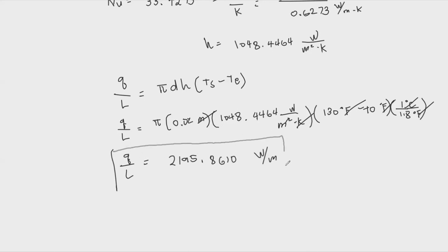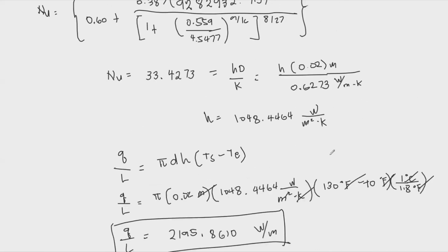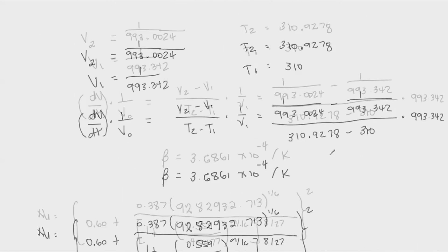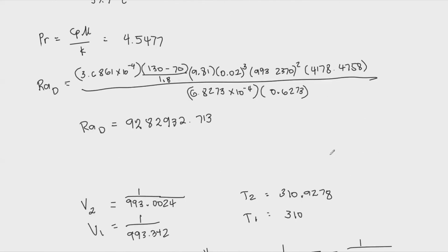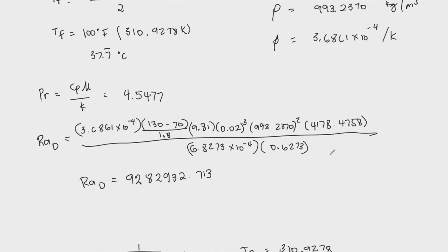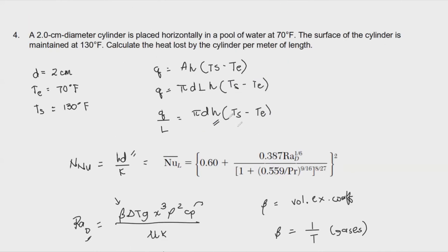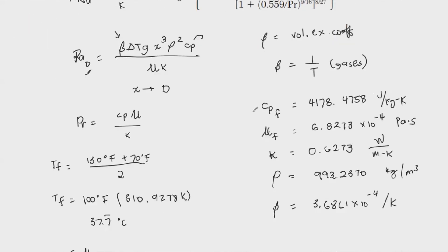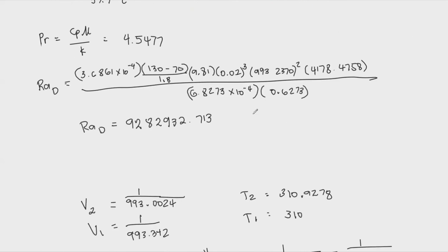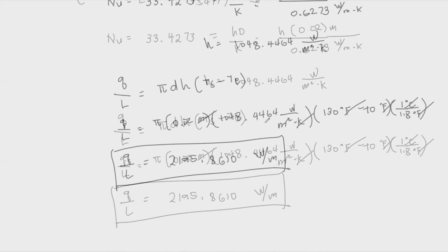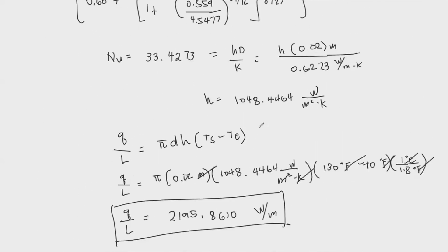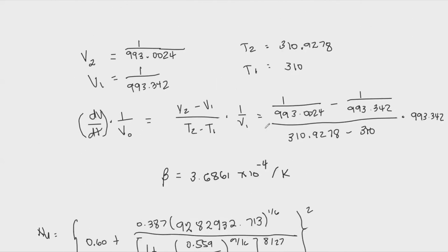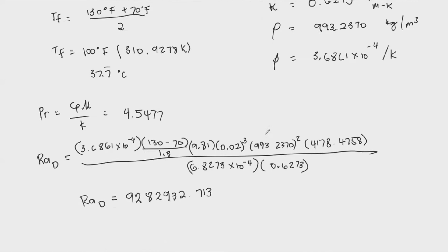The heat loss by the horizontal cylinder per meter of length is 2195.86 W/m. That concludes the external natural convection problem for this geometry.